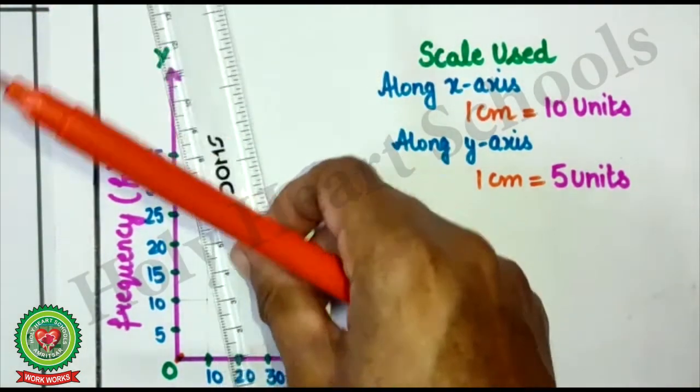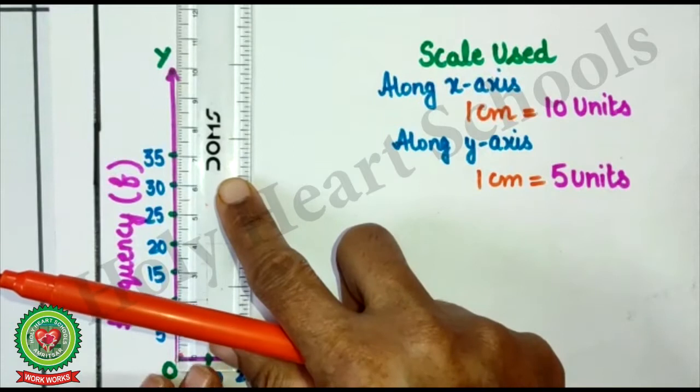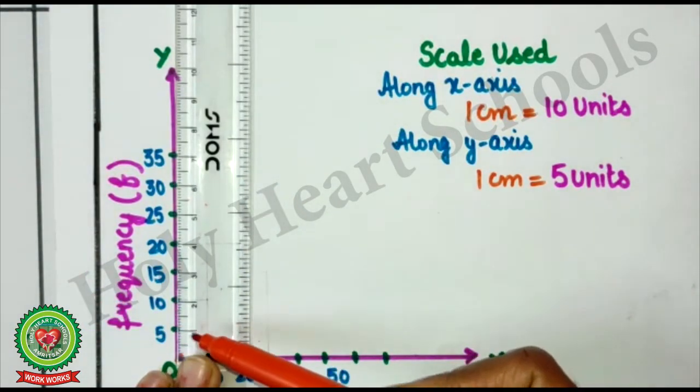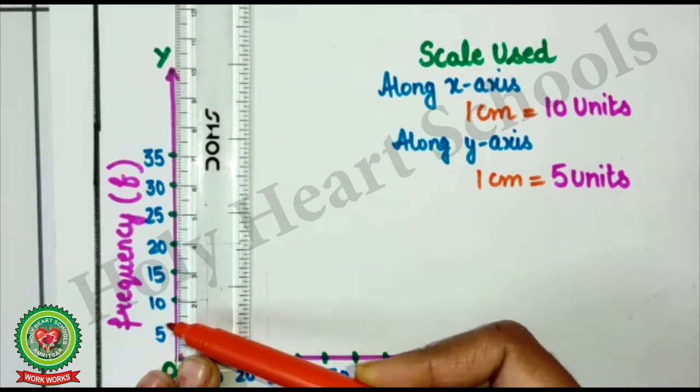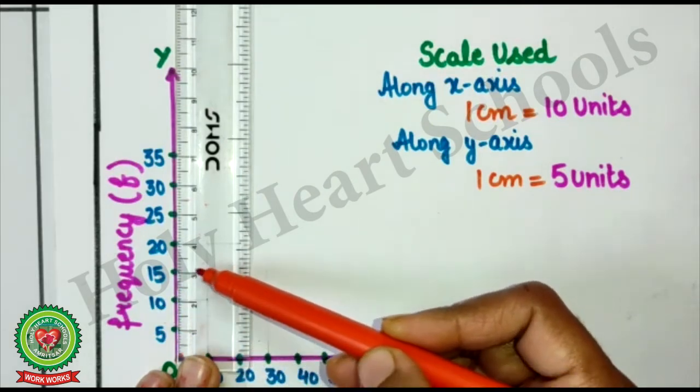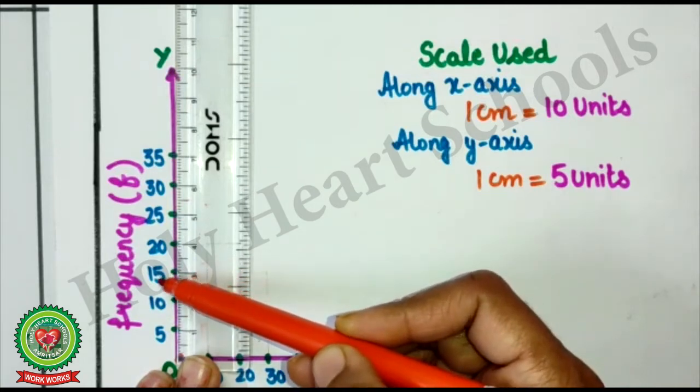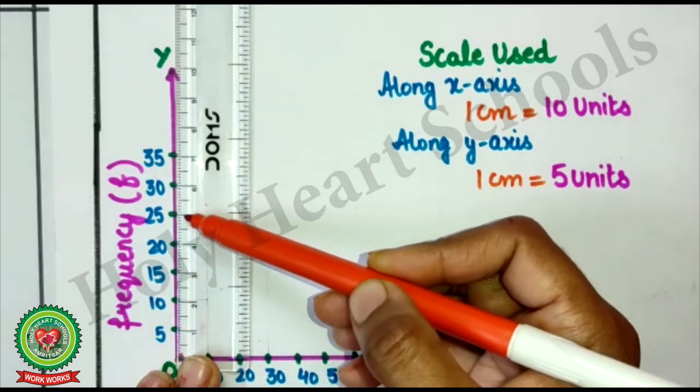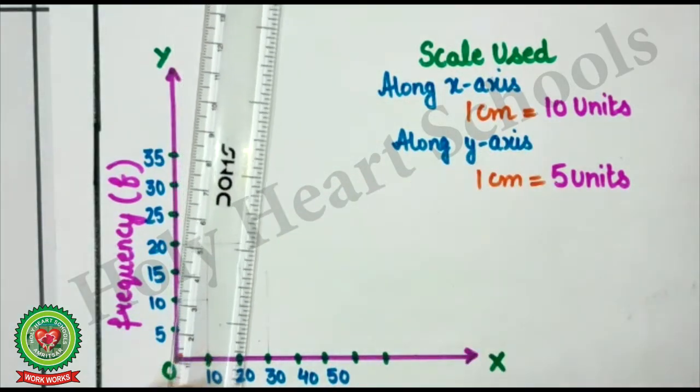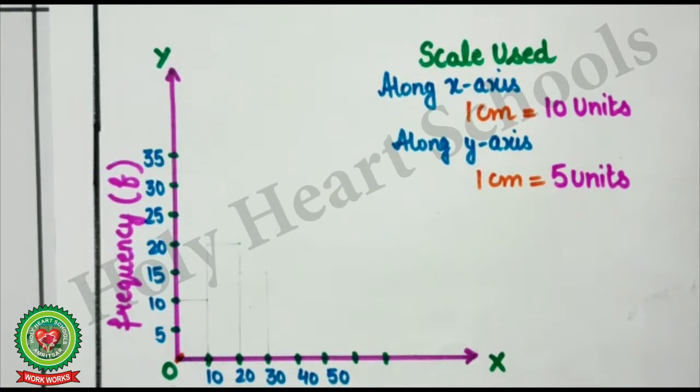Here, using scale, I will take distance of 1-1 cm. Here, at 1, I will take 5. At 2, 10. At 3, 15. 20, 25, 30, 35. So, in this way, I will mark all the numbers.